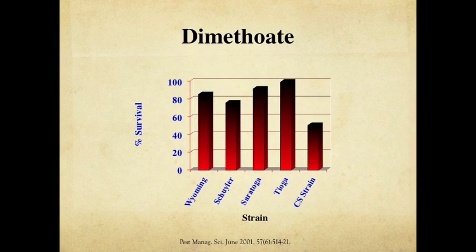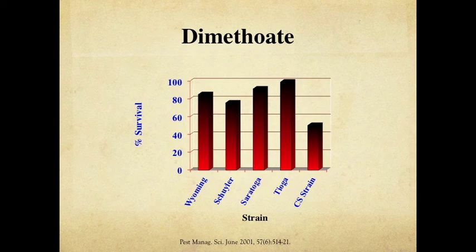The next material looked at was dimethoate, a commonly used organophosphate. We can see the four different wild type flies showing not 100% survival but still very high rates of survival. There is also a fair amount of survival in the CS strain when exposed to label-recommended rates of this material.